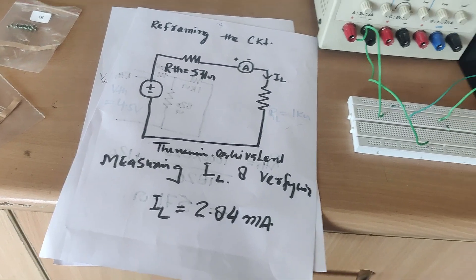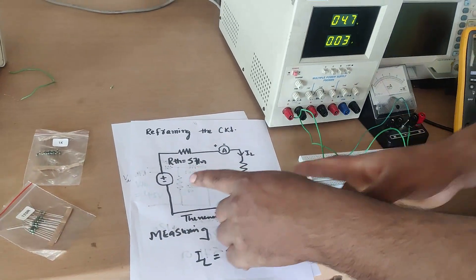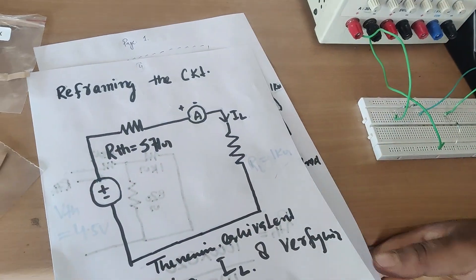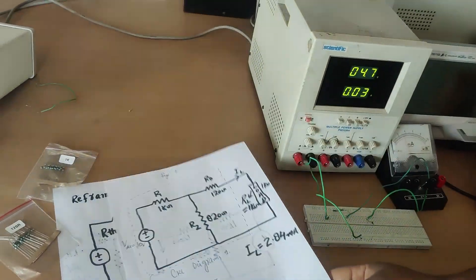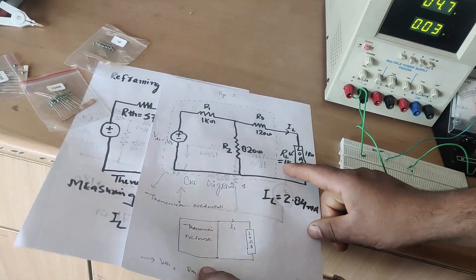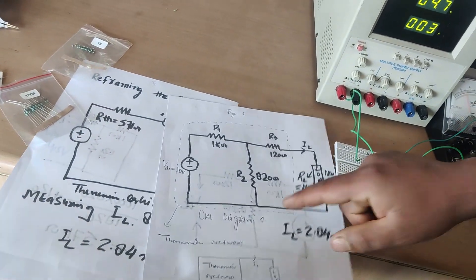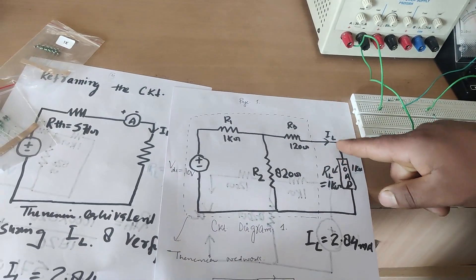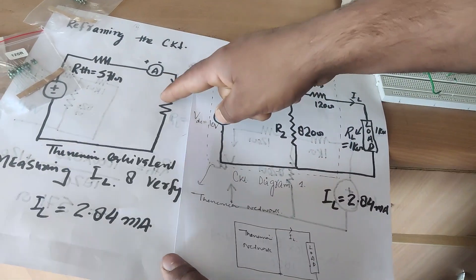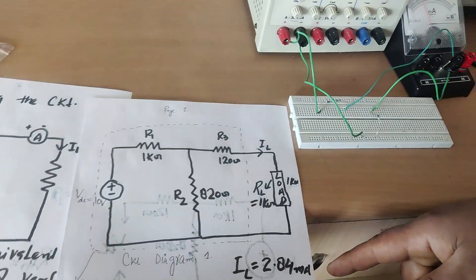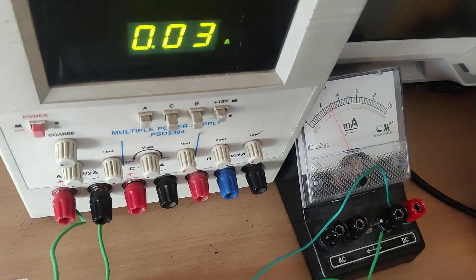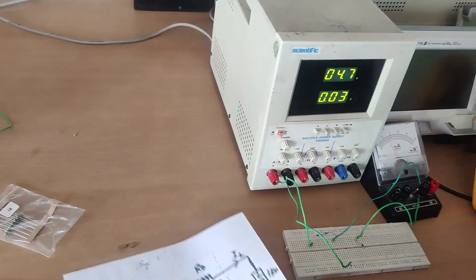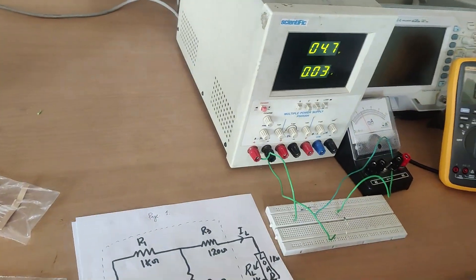Hence we have proved that this simpler Thevenin circuit with one source and one resistance, connected to the load, gives the same load current of 2.84 milliamps as the original complex circuit. This is how we can verify Thevenin's Theorem on DC circuits, and the same can be applied to very large complex circuits. Thank you.